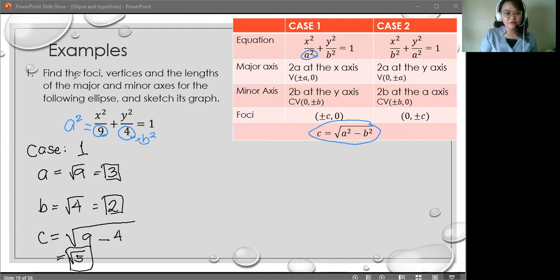It says that we have to find the foci. So let's look for the foci. It's pronounced as foci. Case 1. The formula for the foci is positive, negative, c, comma, 0. So we have the c value, square root of 5. Substitute that there. So we have positive, negative, square root of 5, 0. That's it.